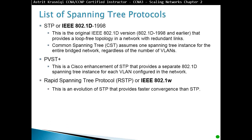Then we have Rapid Spanning Tree Protocol. The original timers were too slow to move from blocking to forwarding mode — 20 seconds for max age timers, then 15 seconds for listening and another 15 seconds for learning, totaling 50 seconds. So they came up with Rapid Spanning Tree Protocol, or RSTP, which is IEEE 802.1W — an evolution of Spanning Tree that provides faster convergence. Those 50 seconds are reduced down to 6 seconds or less.